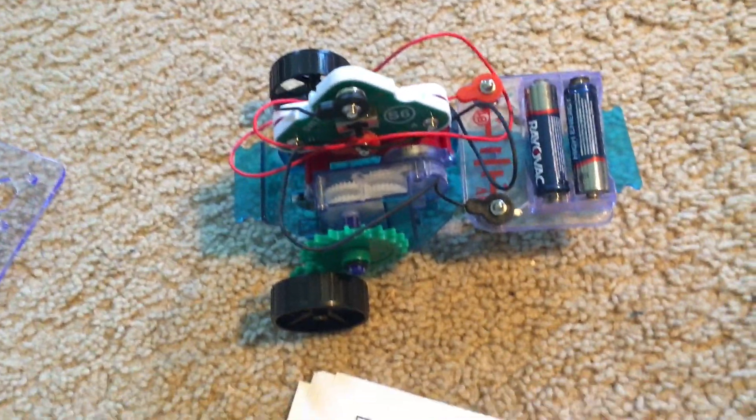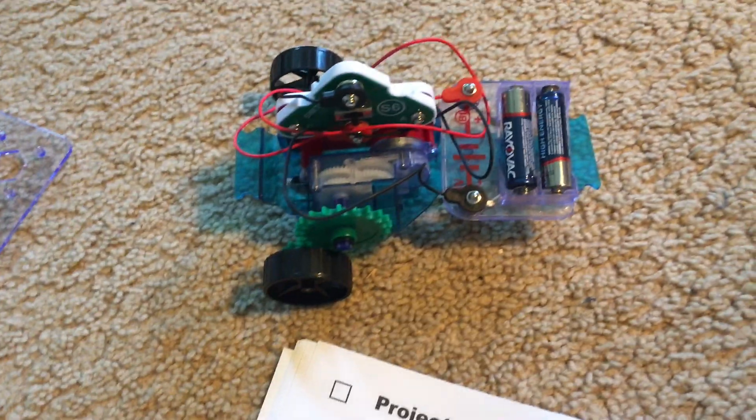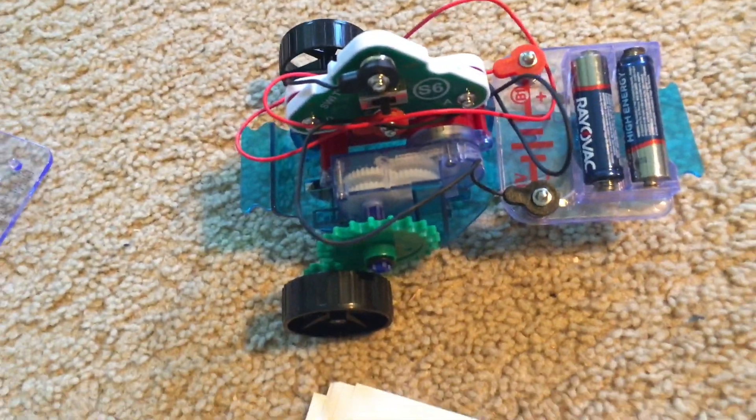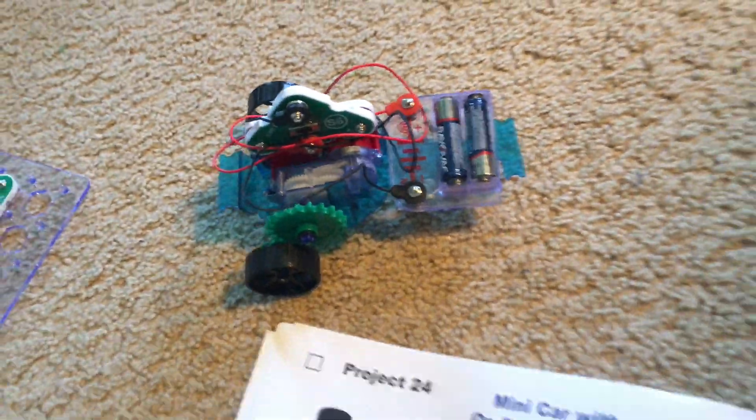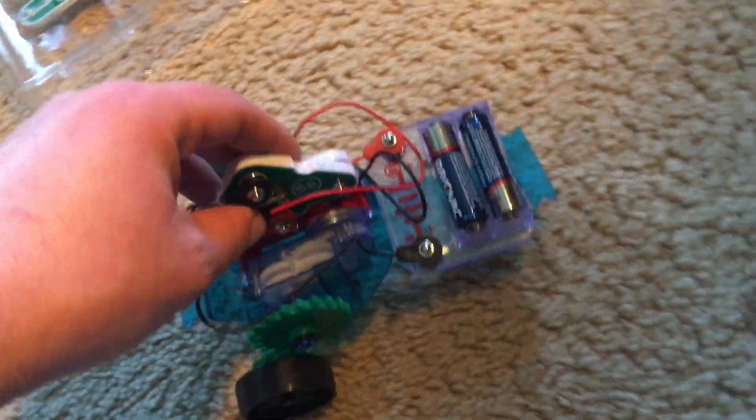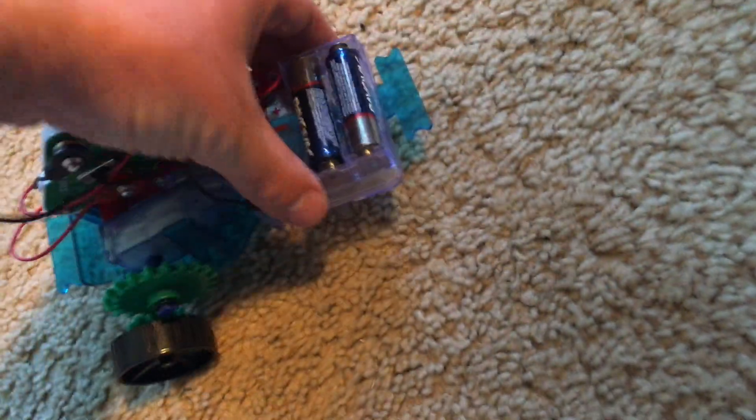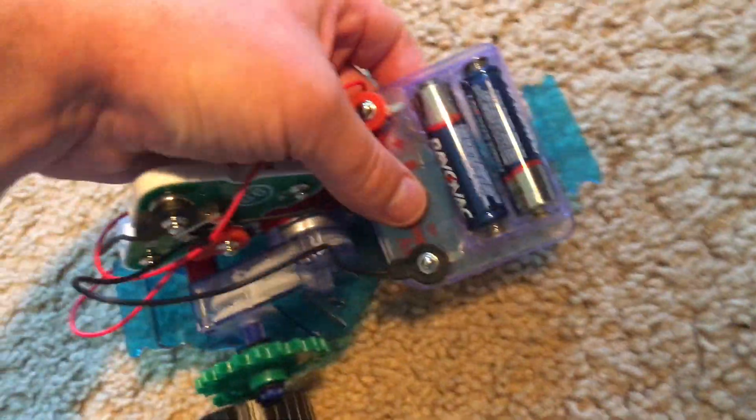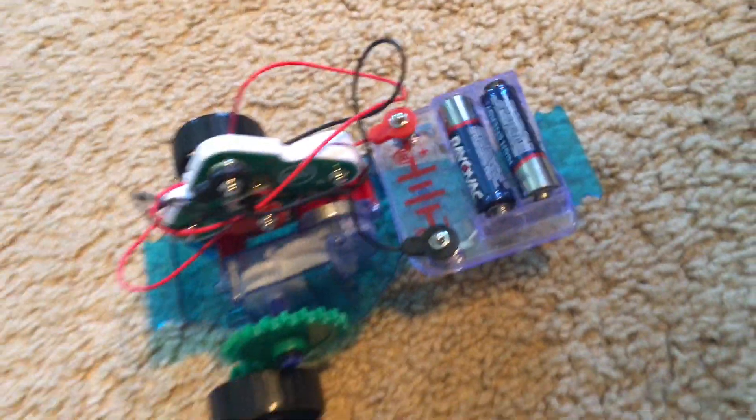This car works best on a hard surface like a hardwood floor and make sure that the jumper wires do not get caught in the gears or wheels because it would interfere with the performance of the vehicle or cause damage. But I think it is very interesting how these types of cars work. Sorry about the battery holder, but it mounts onto the front of the vehicle just like that.